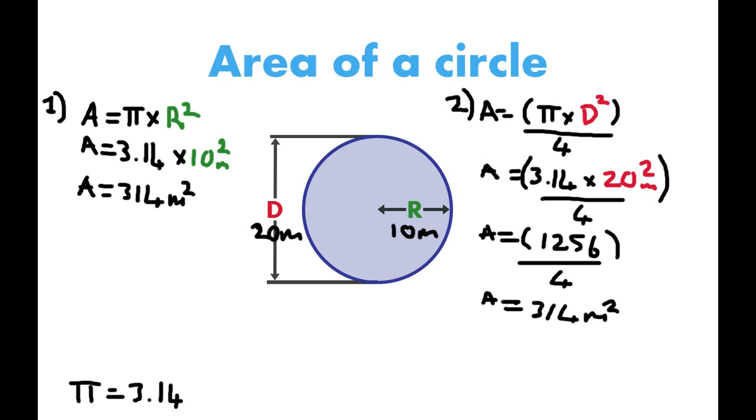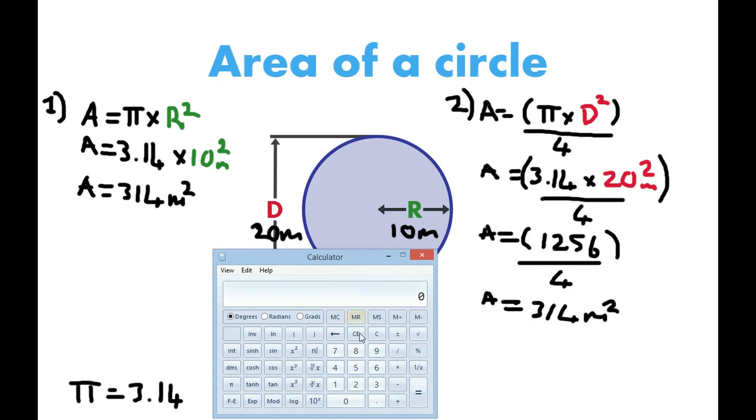And we'll just check that on the calculator. So 3.14, bracket, times 20 squared, bracket equals 1,256. Divide that by 4, 314 meters squared.